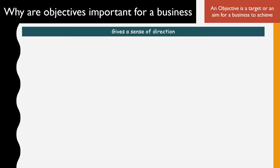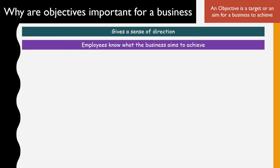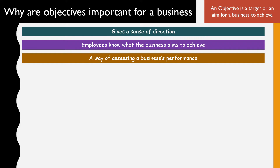Just as setting an objective is important for a student, a business needs to set objectives for the following reasons. First, without an objective there is no sense of direction in the business — what are we going to achieve and why are we here? Secondly, employees would know what the business wants to achieve, and even new potential employees who want to join the company would know what the company is aiming for.